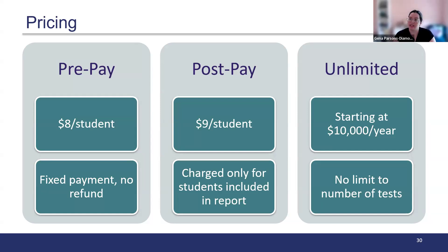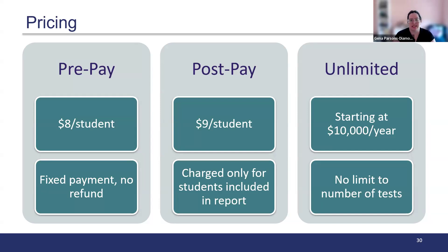If you're not sure how many students will be completing the exam, there is a post-pay option at $9 per student per test. You administer the test as you would normally and are only charged for students who are included in your report. Students who start but do not complete the test, or who do not consent to have their responses used, are not included in the report and you're not charged for them.